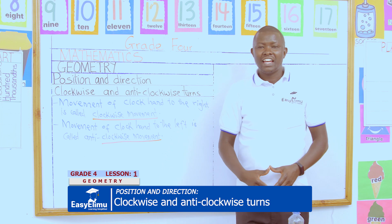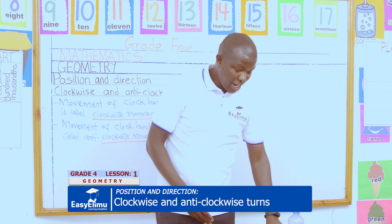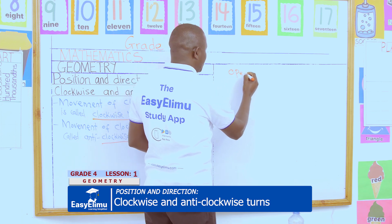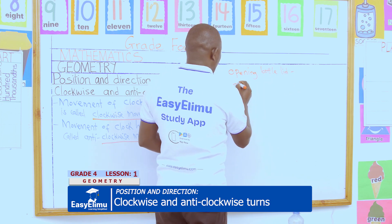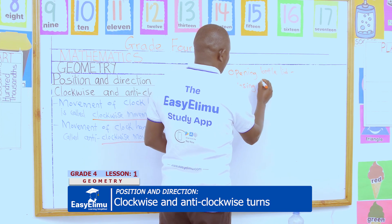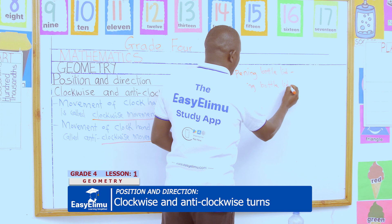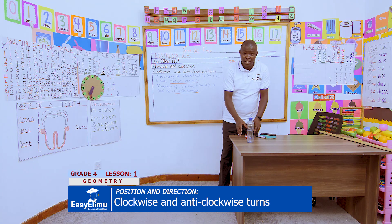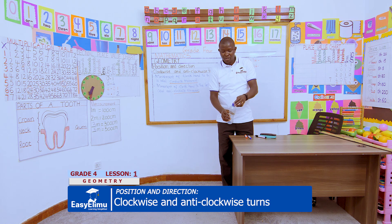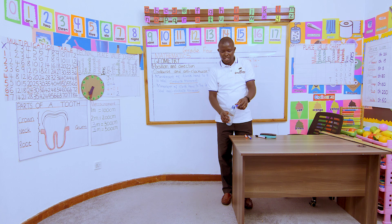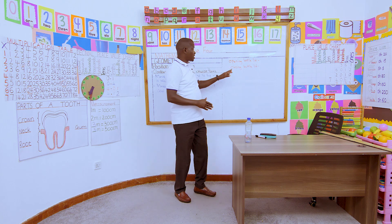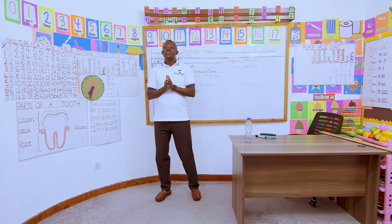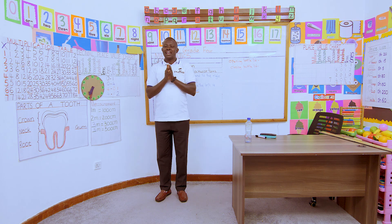Now my question: among the two exercises we have done — opening the bottle lid and closing the bottle lid — which one is the clockwise turn and which one is the anticlockwise turn? Let us repeat them once more. Open the bottle, the lid is out, return the lid and close. Now out of the two exercises, which one is the clockwise turn and which is the anticlockwise turn?